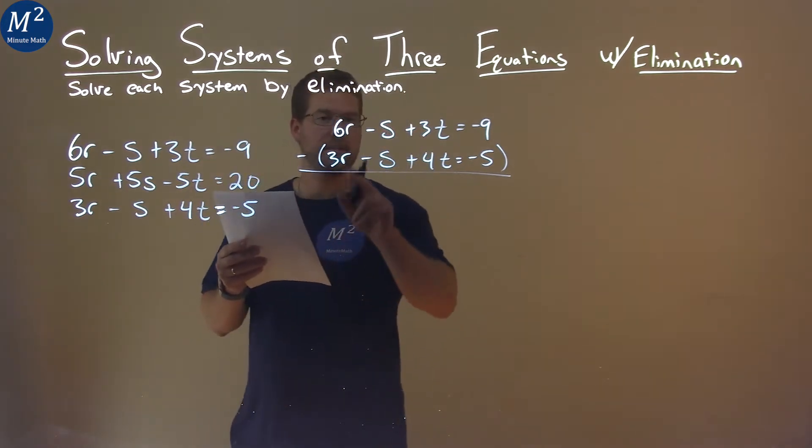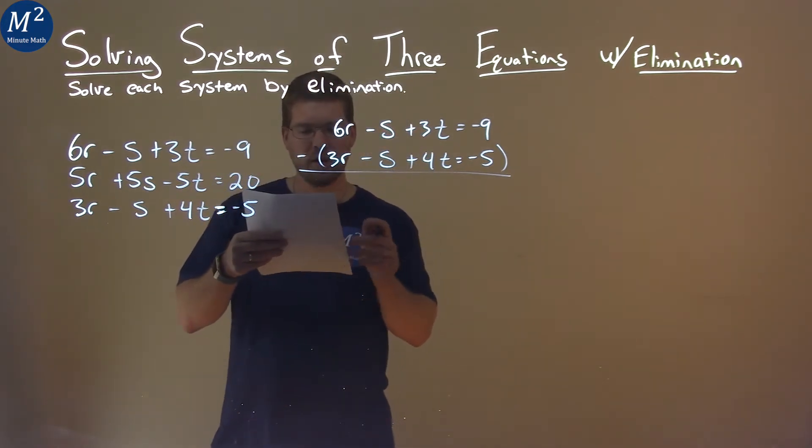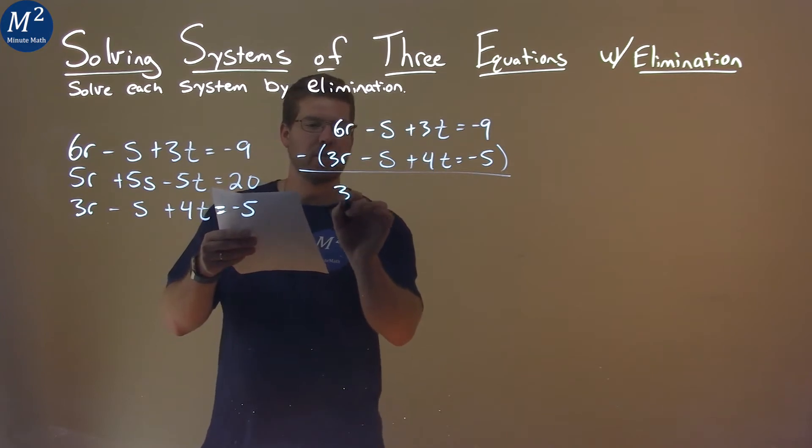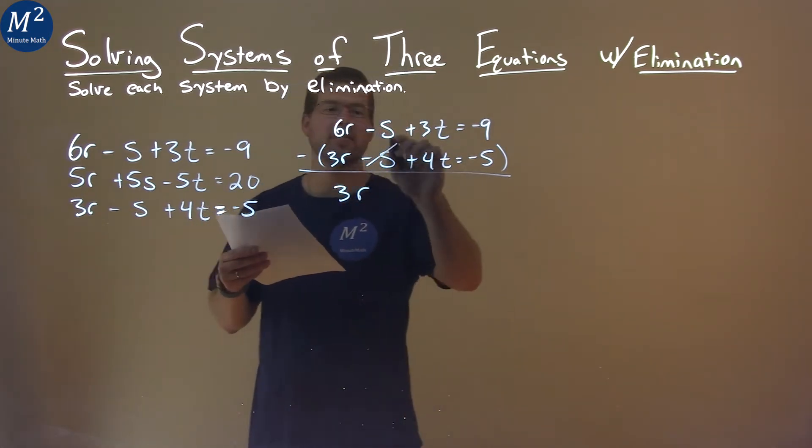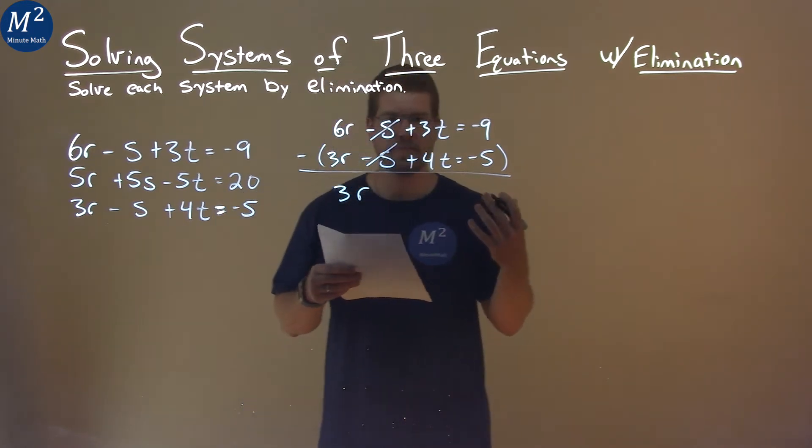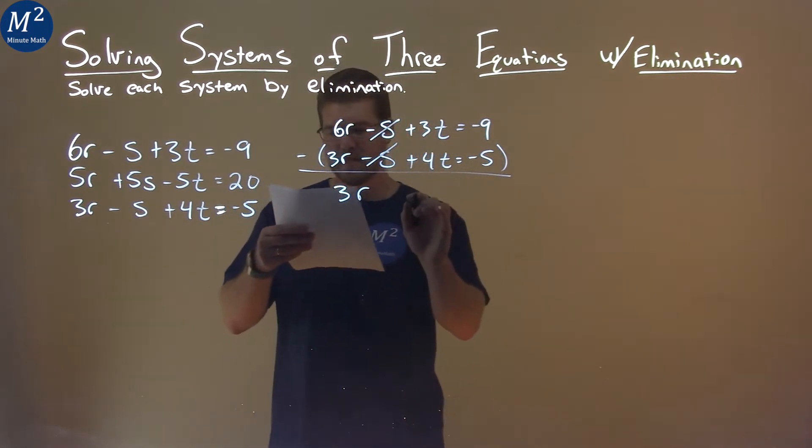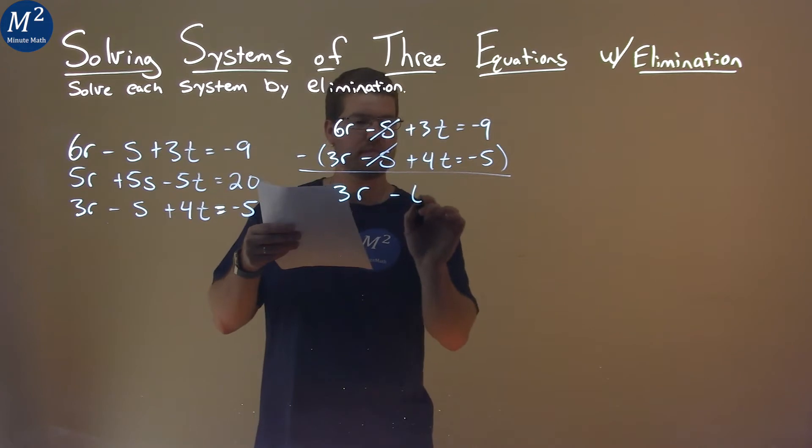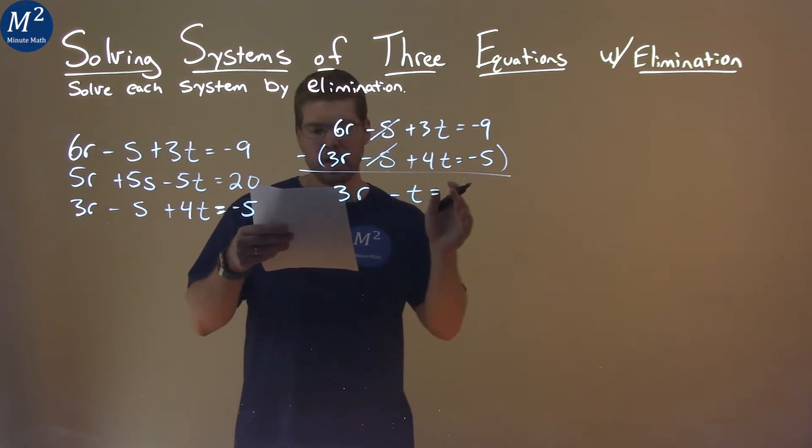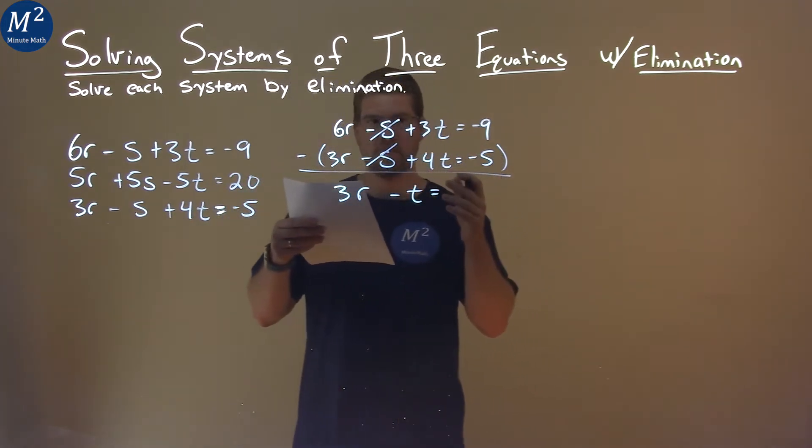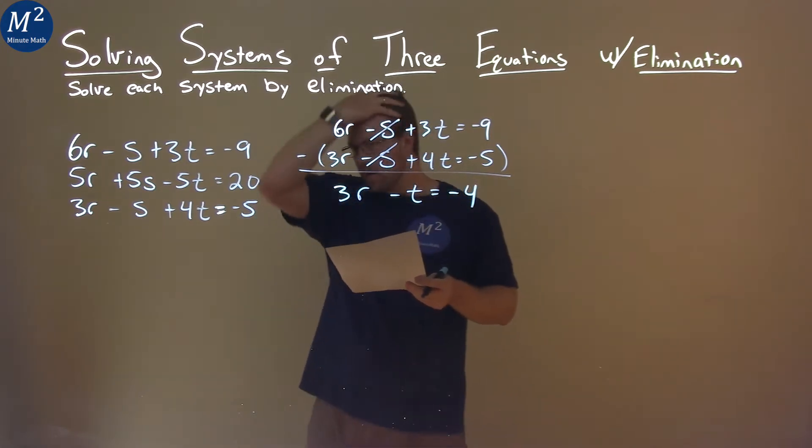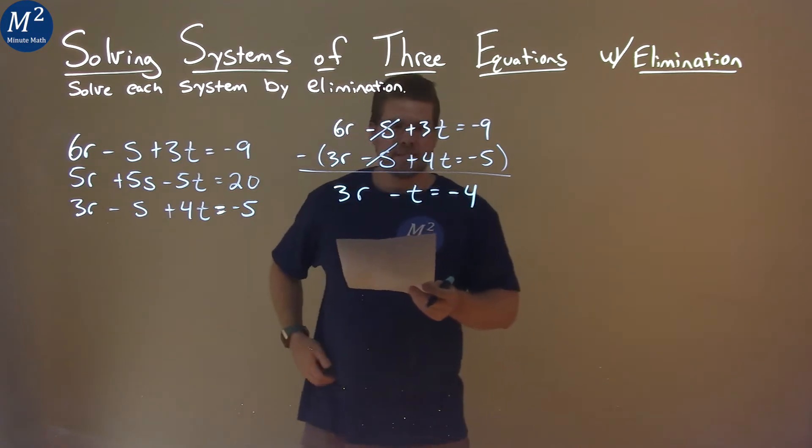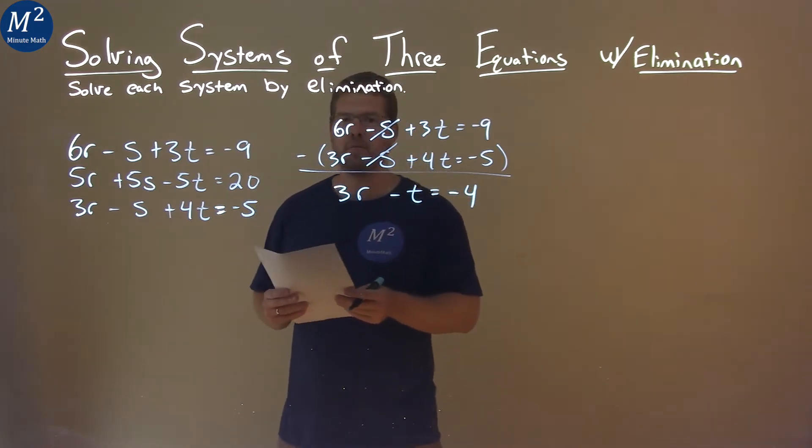So we get a new equation. 6r minus 3r is 3r. Negative s minus a negative s, adding a positive s. That was the whole point. S's cancel. 3t minus 4t is negative t. And negative 9 minus a negative 5, or adding a positive 5 to it, is negative 4. So we have 3r minus t equals negative 4 here.